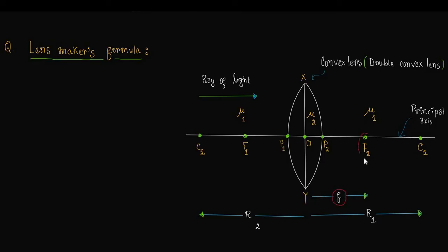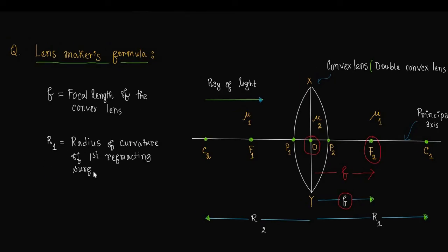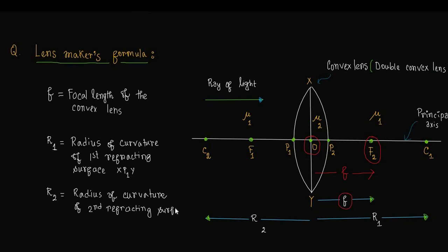In this case, f is the distance of the second principal focus F2 from the optical center O — that is, f is the focal length of the convex lens. R1 is the radius of curvature of the first refracting surface xp1y, and R2 is the radius of curvature of the second refracting surface xp2y.